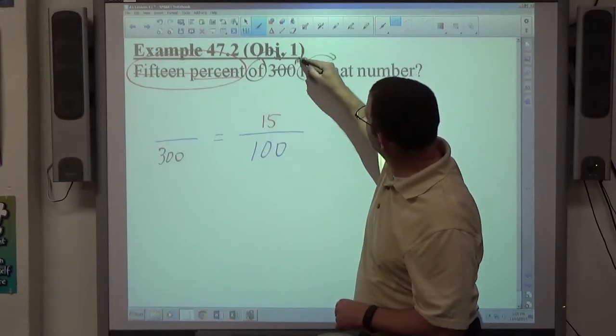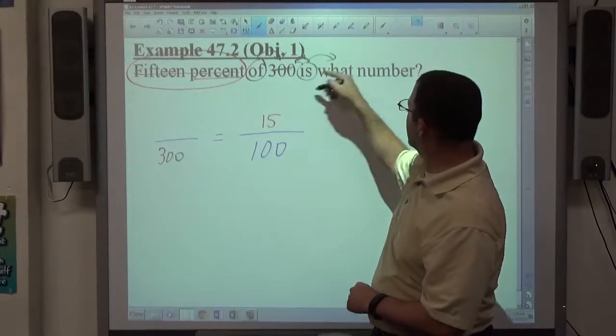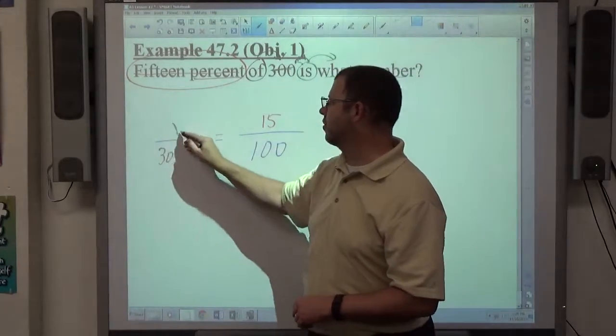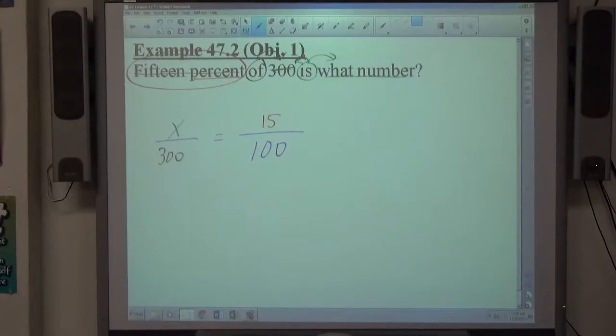And once we use 300 for 'of', we throw that option out for 'is'. So the only 'is' left is what number, so x goes there. So again, priority 1, get the percent proportion filled out properly.